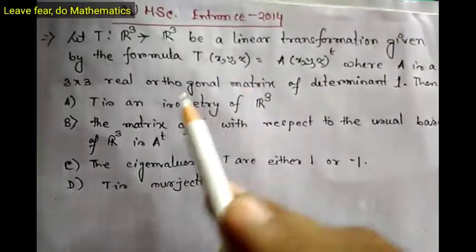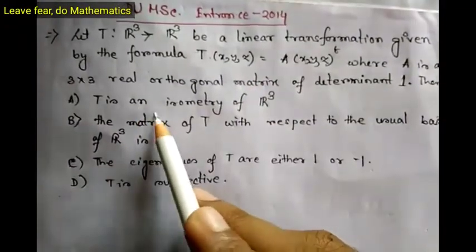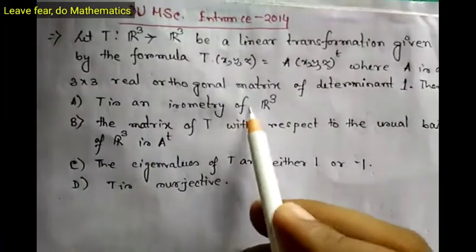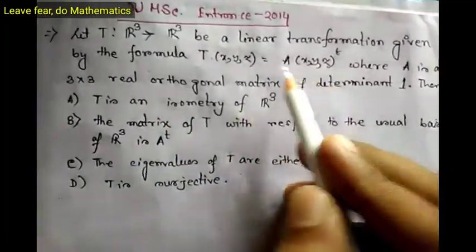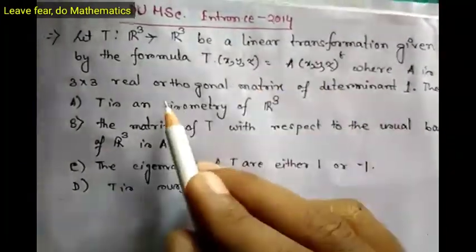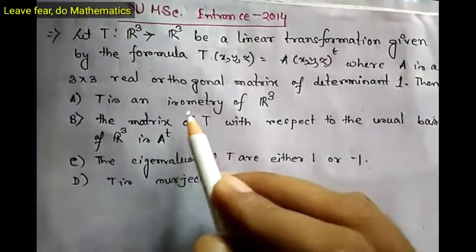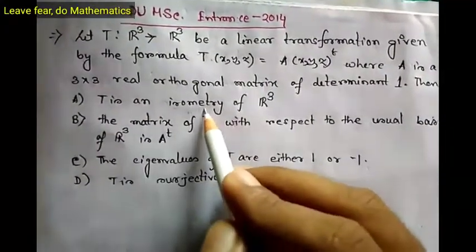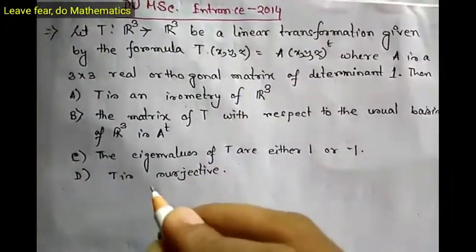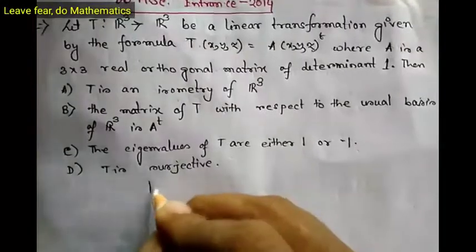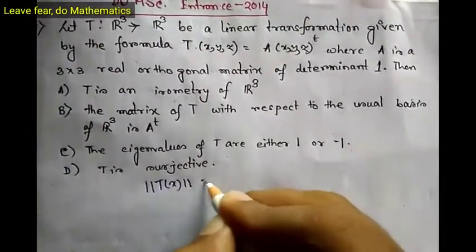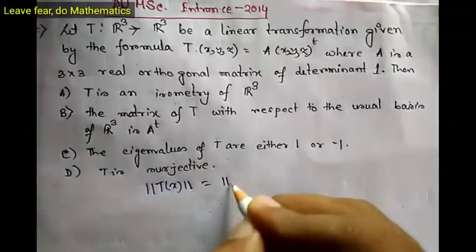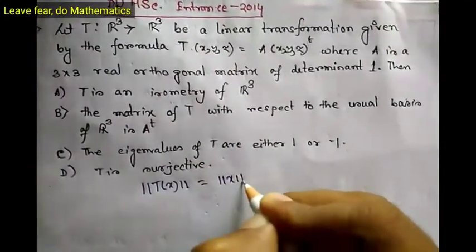Let us prove the first option — that T is an isometry of R³. For isometry, we have to show that it preserves distance, that is, the norm of T(x) equals the norm of x.